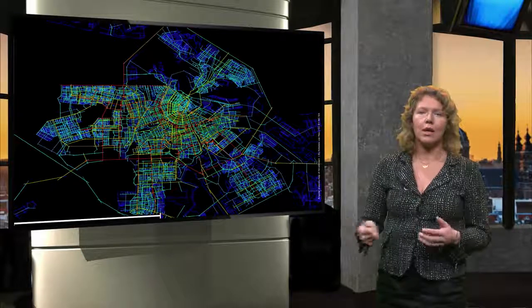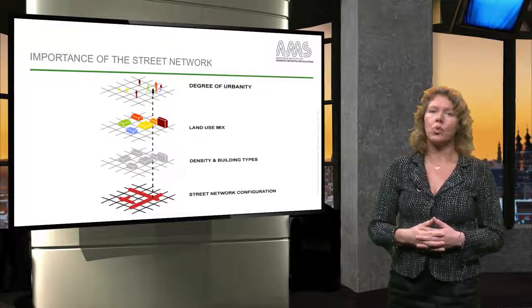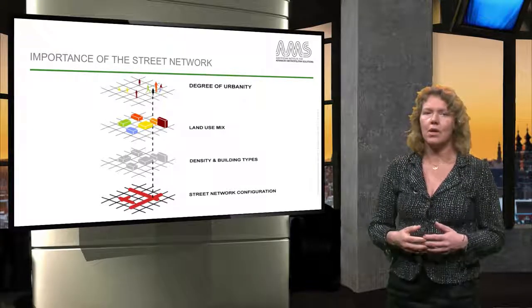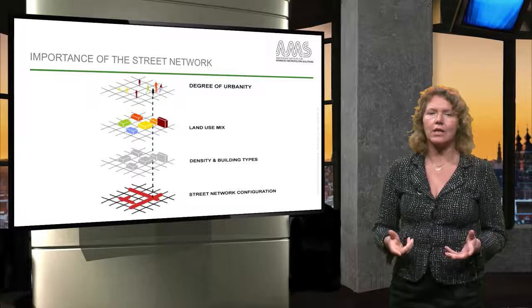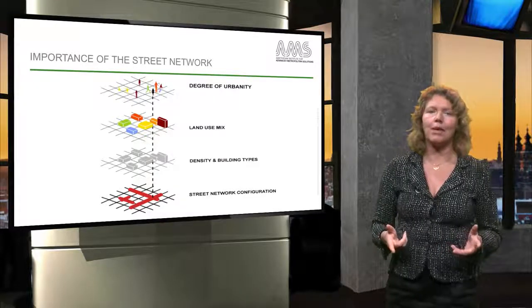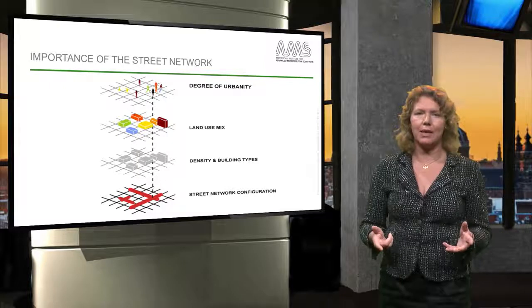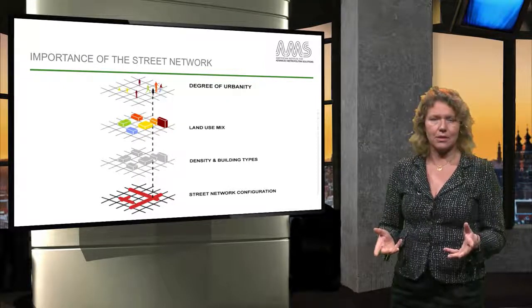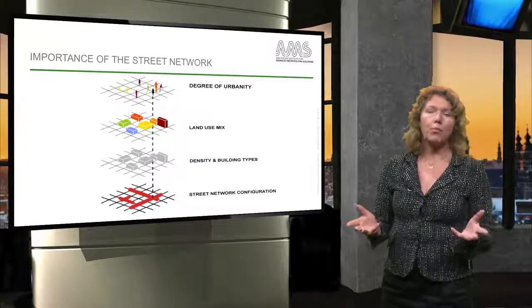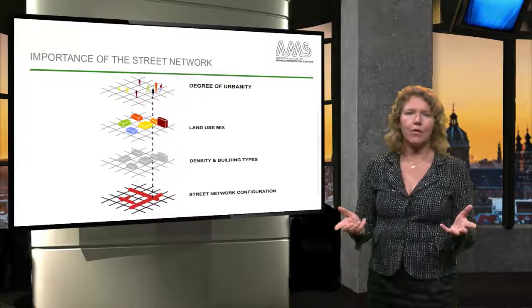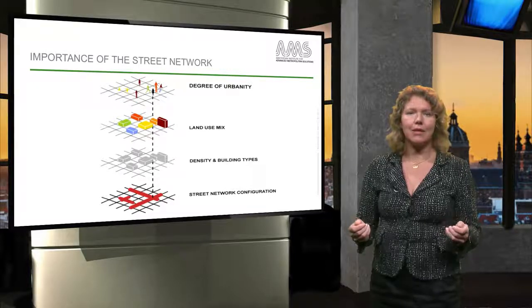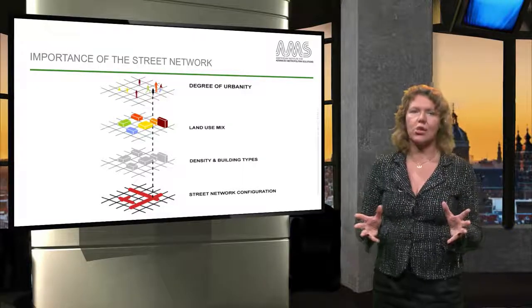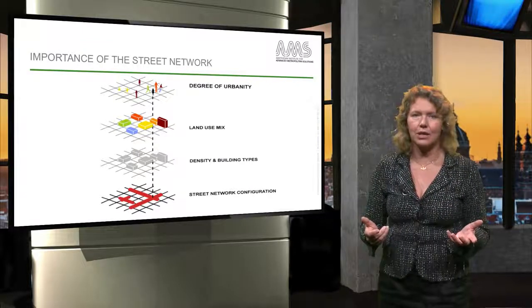The street network plays a large role in how cities transform. As research has shown, the street network configuration tends to steer the building density, but also the land use mix, that influences how people use streets. So the more people in streets, the higher degree of urbanity. Density, diversity and degree of street life are very strongly influenced by the street network configuration.